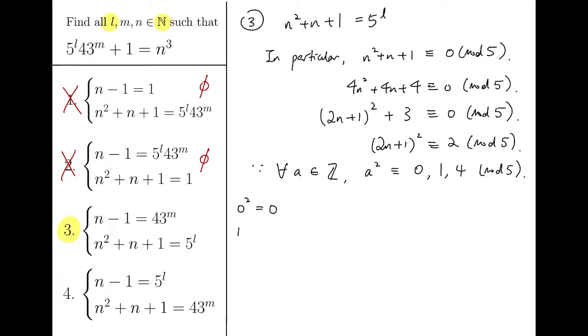0 squared is 0, 1 squared is 1, 2 squared is 4, 3 squared is 9 congruent to 4 mod 5, 4 squared is 16 congruent to 1 mod 5, and so you can see we only have 0, 1, or 4 mod 5, and we cannot have 2 in particular. So, there is no solution for this case again.